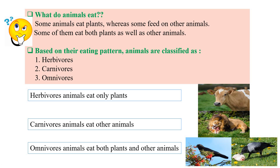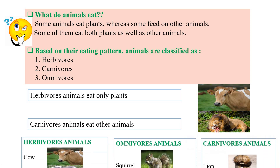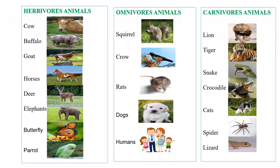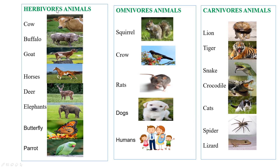Here are some examples of each category. Herbivores animals include cow, buffalo, goat, horses, deer, elephants, butterfly and parrot. Omnivores animals include squirrel, crow, rats, dogs and humans. Carnivores animals include lion, tiger, snake, crocodile, cats, spider and lizard.